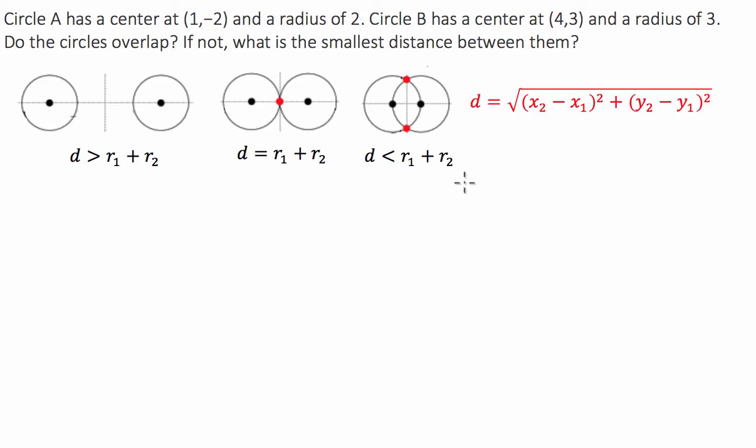Circle A has a radius of 2 and circle B has a radius of 3. Now we're asked to find if the circles overlap and if not, what is the smallest distance between them.